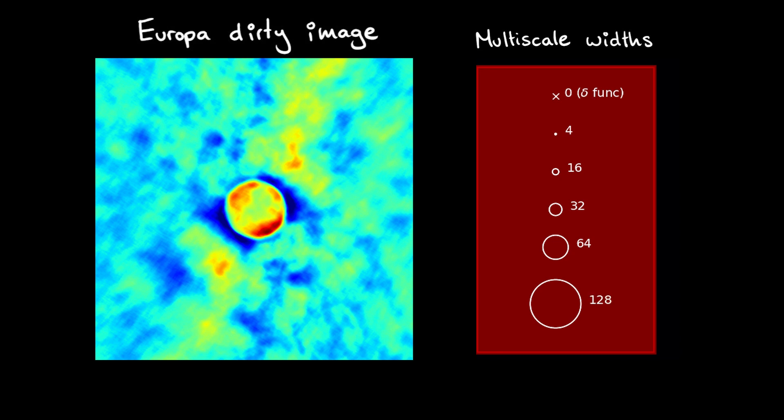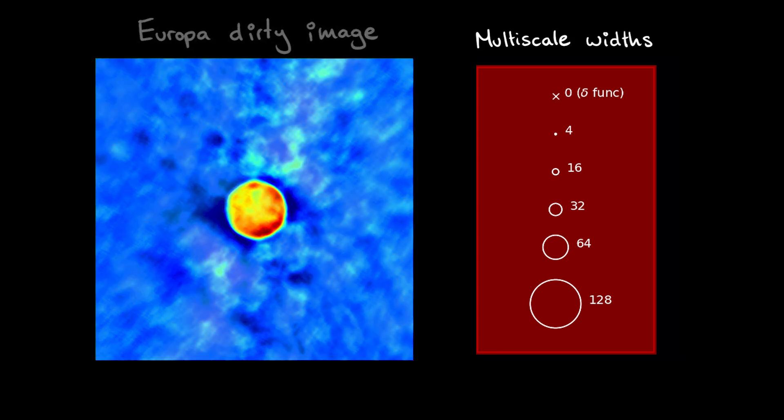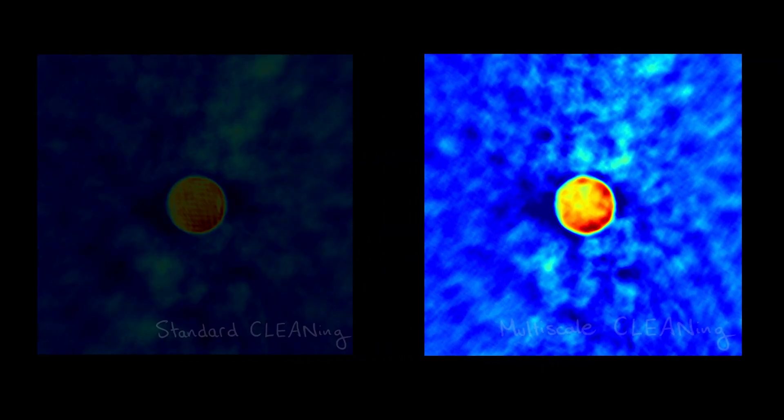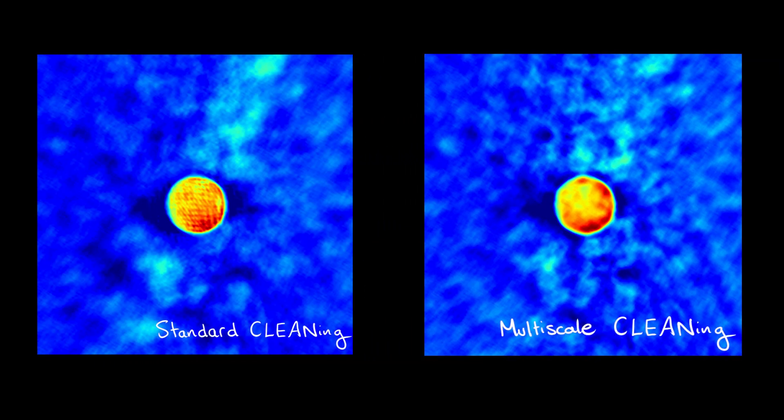Using these sizes and other appropriate cleaning parameters, here's the final result that we get. Because of the choices that we made, this clean worked well. The image cleaned with multi-scale has a much smoother and more physical distribution while recovering more flux, and only needed a fraction of the number of components as the regular clean.